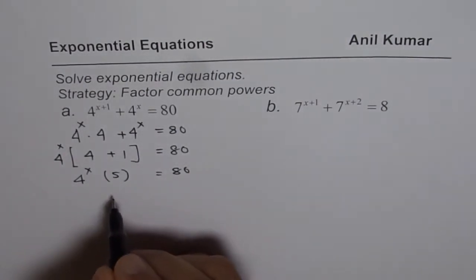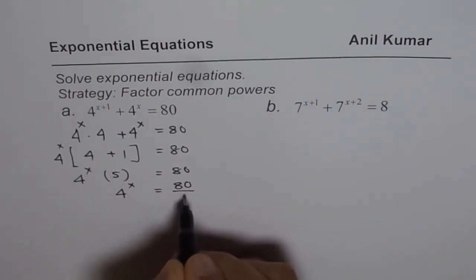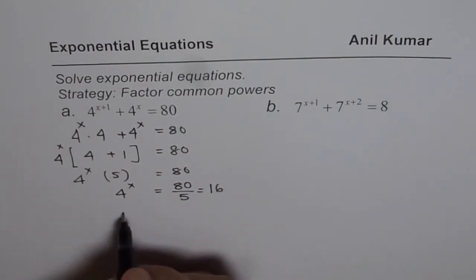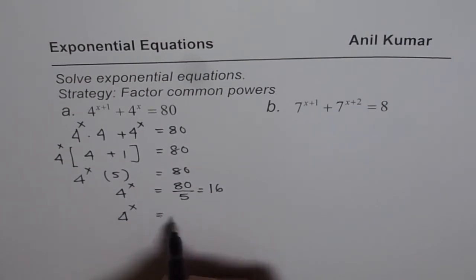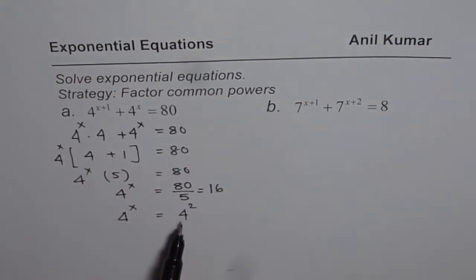You can now divide by 5 to get what 4 to the power of x is. 80 divided by 5, this goes 1 times and 6, 16. Now, 16 could be written as 4 to the power of 2. Here we have used our first strategy, which was writing with the same base. Once we have same bases, then the exponent should be equal. We get x equals 2 as our answer.